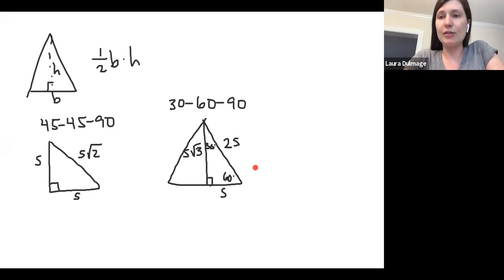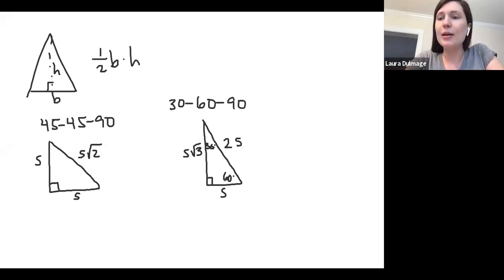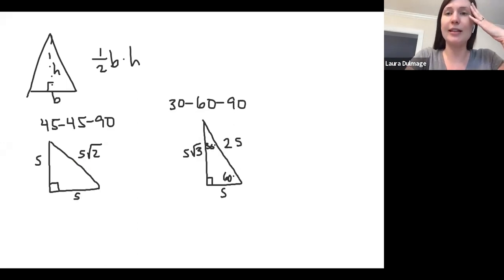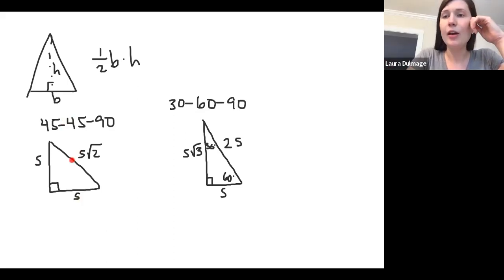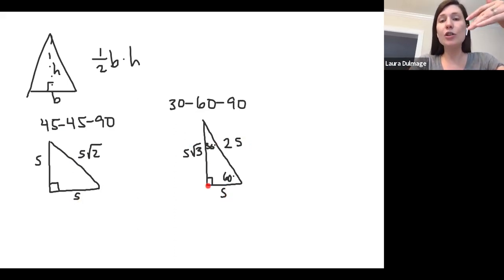We're also going to look at semicircles. The idea behind these two special right triangles is that they have relationships between the side lengths. For the 45-45-90: if the leg is 5, the hypotenuse is 5 root two. For the 30-60-90: the smallest side is across from the 30-degree angle, double it for the hypotenuse, and multiply by root three for the longer leg.